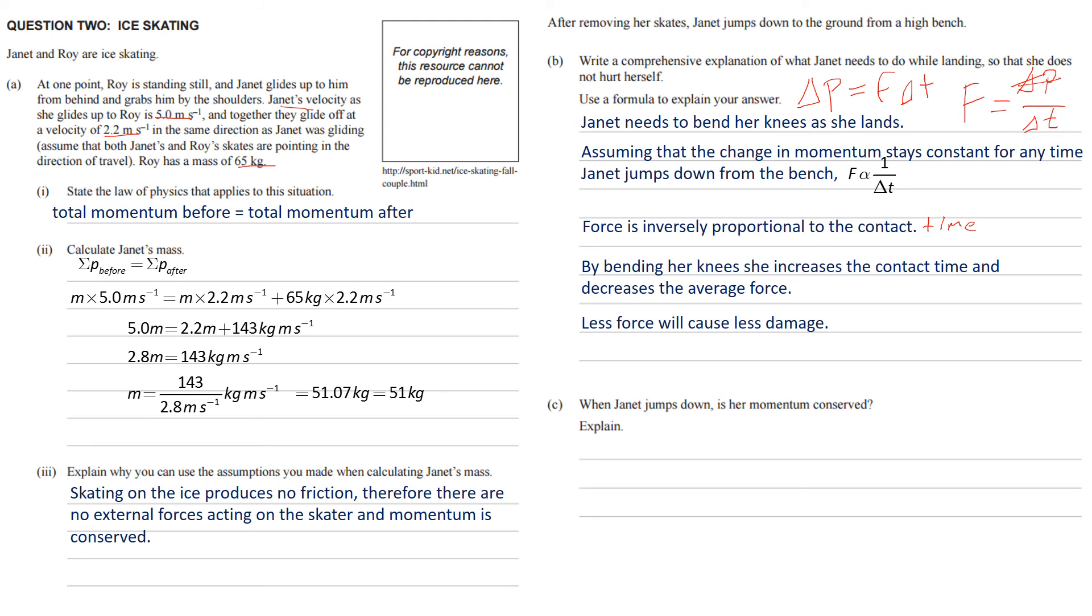You're either going to do it here using an equation or using words. I would encourage you to do both. You need to link it together and say when she bends her knees, the contact time increases so the average force will decrease. And just to be sure, we're going to say, just in case they're not sure themselves, less force will cause less damage.